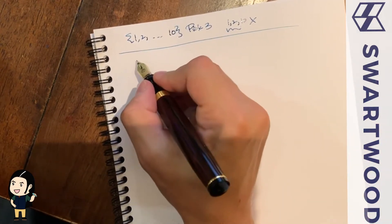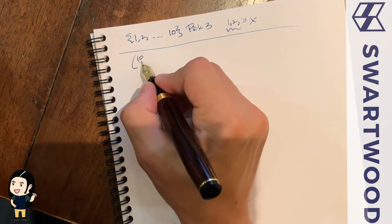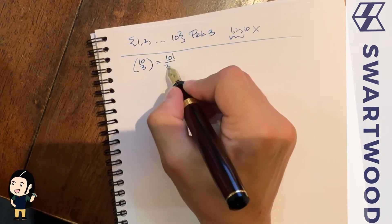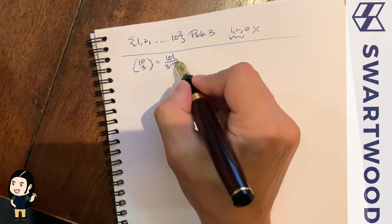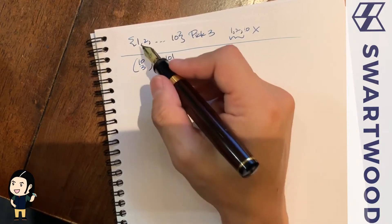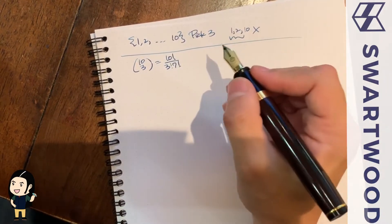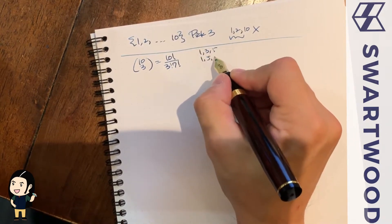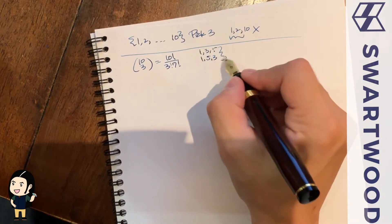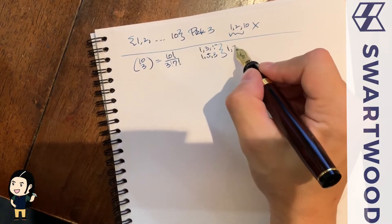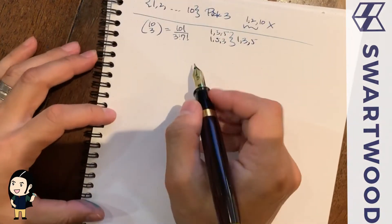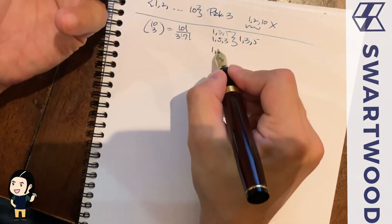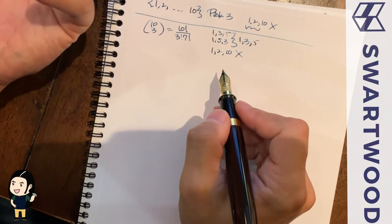First, a quick review: 10 choose 3 is equivalent to 10! / (3! × 7!). This is where you have all ten numbers, pick any three, and the order doesn't matter — so picking 1, 3, 5 or 1, 5, 3 are considered the same. But that's not the answer we want, because you could always pick numbers like 1, 2, 10, which we don't want.